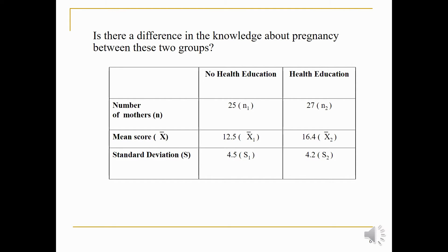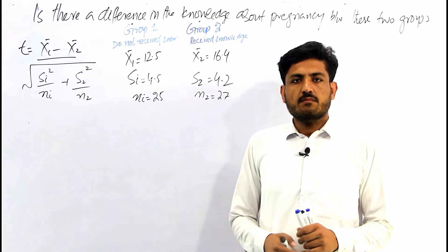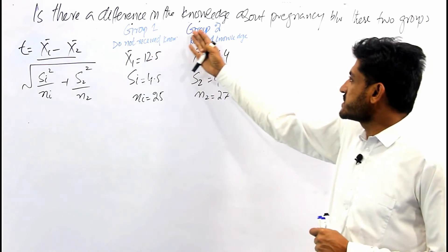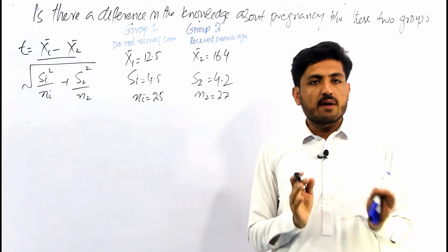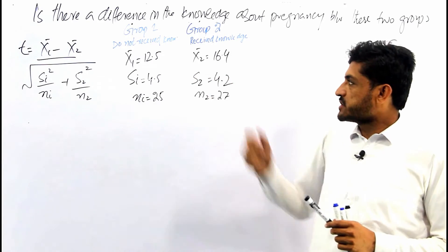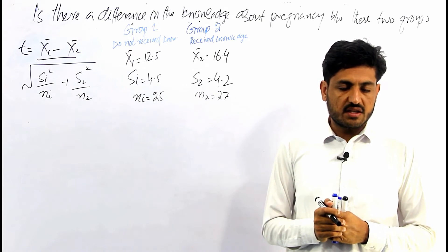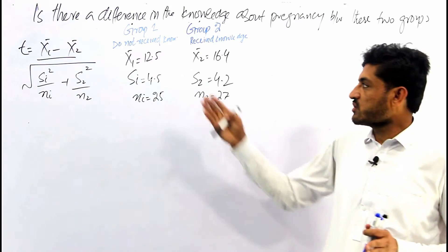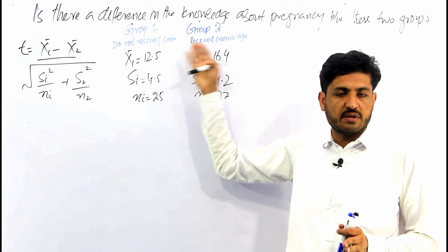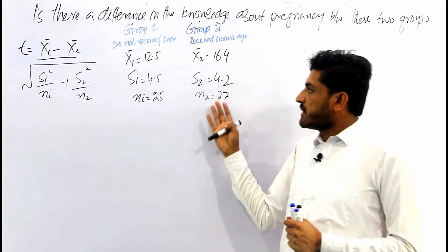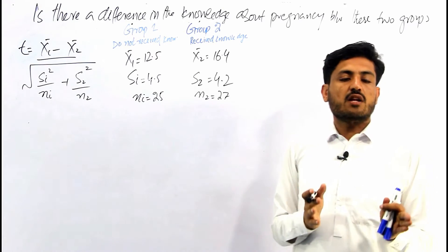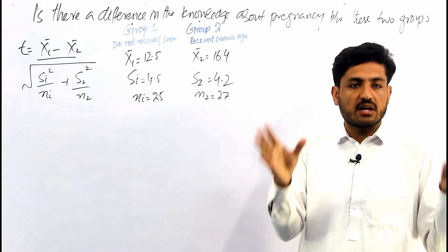Now we have the formula for the independent t-test. Let's do this example on the whiteboard. We are testing: is there a difference in knowledge about pregnancy between these two groups? We have two groups — one received health education related to pregnancy and the other did not. Therefore we have two independent groups, and we will apply the independent t-test. The independent t-test is applied on two independent groups, two independent samples, or two independent populations.